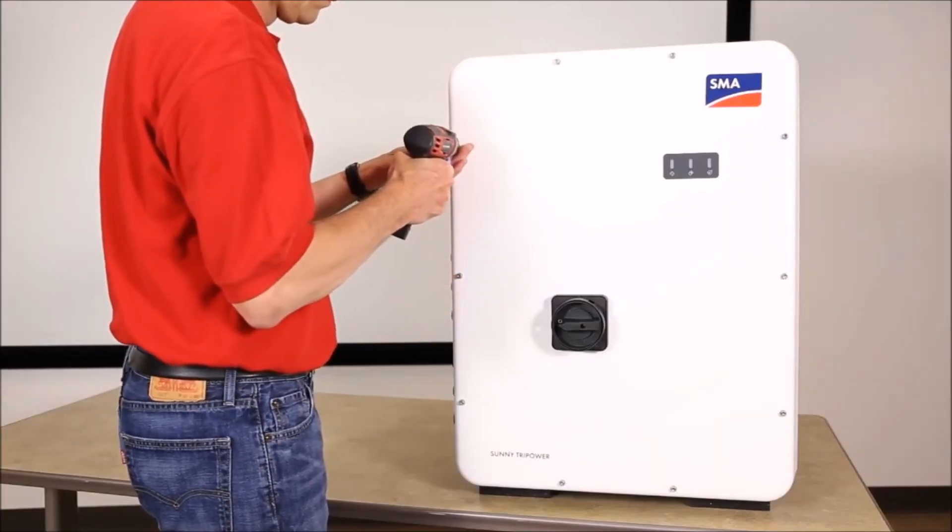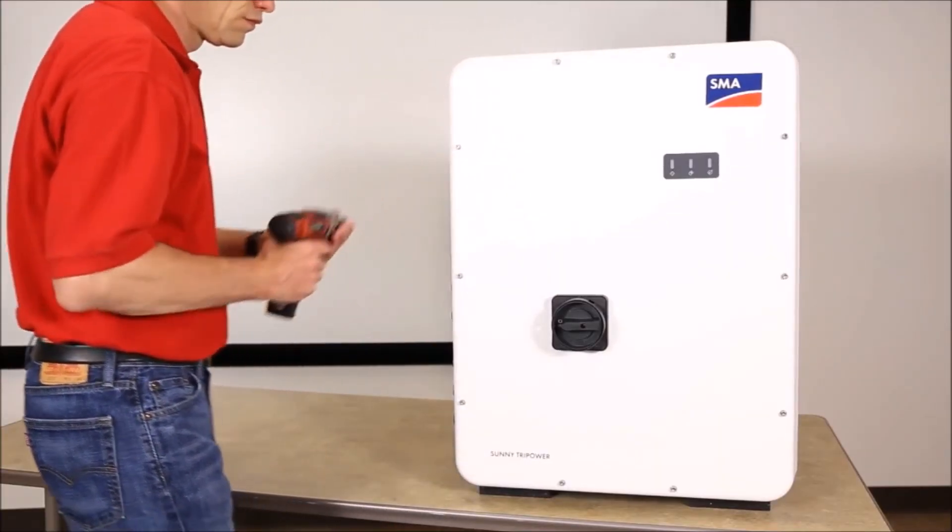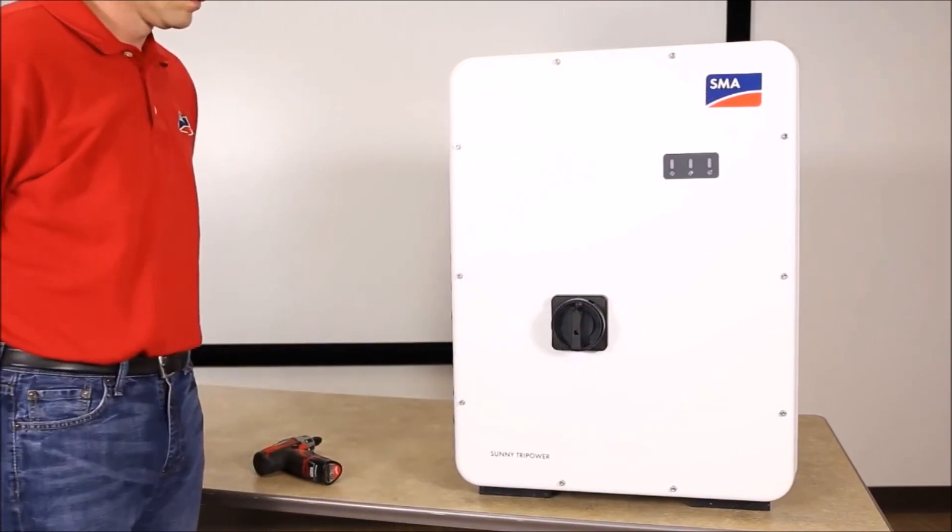Now we are ready to put the covers back on the inverter. After we are finished, the DC and AC disconnects can be turned on and the inverter is ready for commissioning.